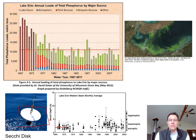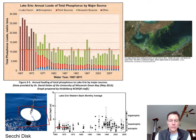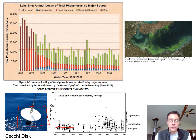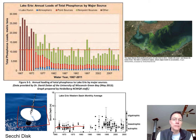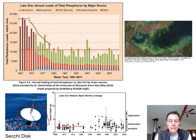Secchi readings from Lake Erie back in 1965 were pretty shallow — about two meters. In the 1960s and 70s, Lake Erie was declared a dead lake because it was so loaded with pollutants, phosphorus, and nitrogen. There was so much algae growth and death, almost no oxygen and almost no fish — they called it an algae bowl. Then in the 1970s the Clean Water Act was passed, which really helped clean up Lake Erie, and phosphorus loads decreased, though the Secchi depth didn't immediately spring back.